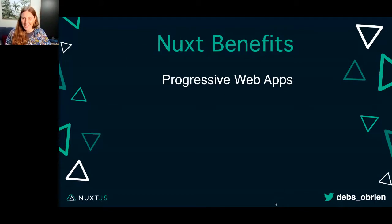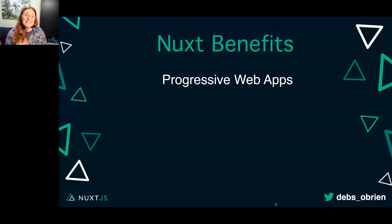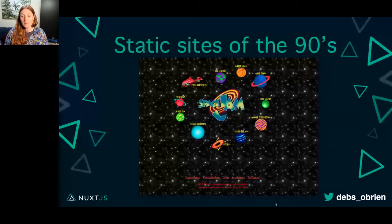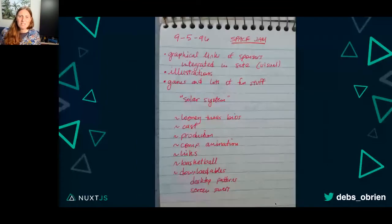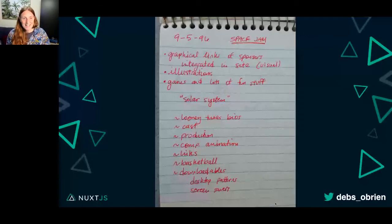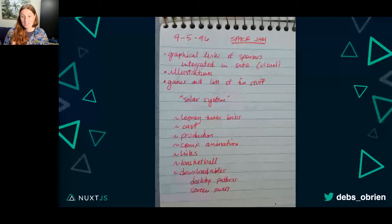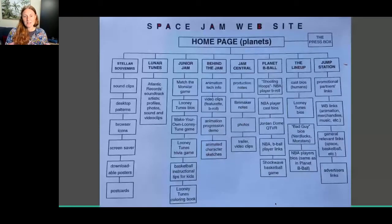You're looking and going: yeah, but static sites are so boring, right? Do you remember the static sites of the 90s? This is one of the most iconic websites of all time — from 1996, this is the Space Jam website. It's still live today, and everything still works. That's not what we're building today, but the static sites of the 90s were really cool. This is how they built it — their notes on what they were going to add: graphical links to sponsors, the games, the solar system. And if you look at their sitemap, it's actually not that static — there's games, a photo, a trailer, video clips, animated character sketches. Maybe static sites in the 90s were not so bad after all.